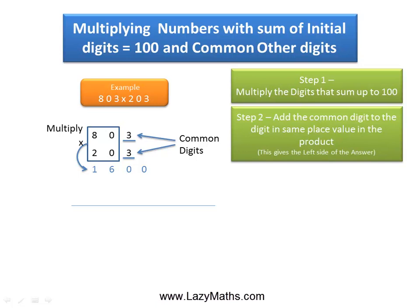The next step is to add the 3 in the same place value in the product. Notice the way we add the 3 to 1,600 — so we get 1,630 as the left-hand side of the answer.